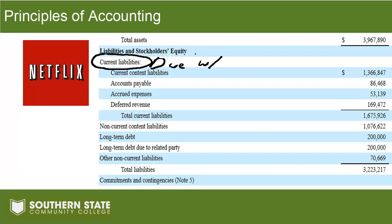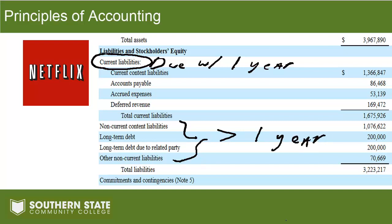Current liabilities are going to be liabilities due within a year, though there could be some exceptions — if a company has an operating cycle longer than a year, current liabilities might extend beyond that. But for the most part, current liabilities are due within one year of the balance sheet date. You'll notice a line item called current content liability — that's amounts Netflix has to pay within the next year to providers of the TV shows and movies we stream. Accounts payable — amounts owed to suppliers and vendors — are also generally going to be current.